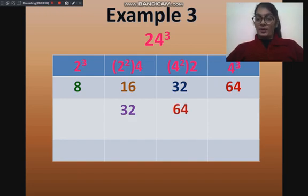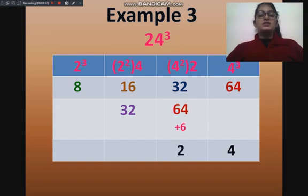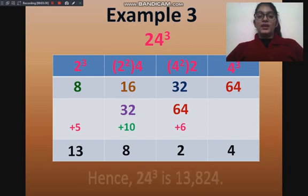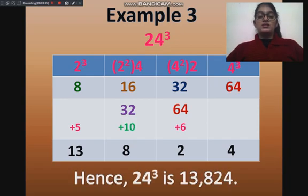Now we will add all them up. First, we will add 4, and 6 will be carried out. Then 32 plus 64 plus 6 is 102 — 2 will be written and 10 will be carried out. Then 16 plus 32 plus 10 is 58 — 8 will be written and 5 will be carried out. Then 8 plus 5 is 13. Hence, 24 cube is 13,824.